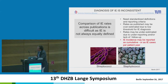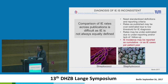There is a need for standardised definitions and reporting criteria. Published rates may be over- or underestimated. Infective endocarditis incidence may be reported as cumulative incidence, which is time-related, or as incidence per patient year, which is more comparable. Comparison of IE rates across publications is very difficult as IE is not always equally defined.